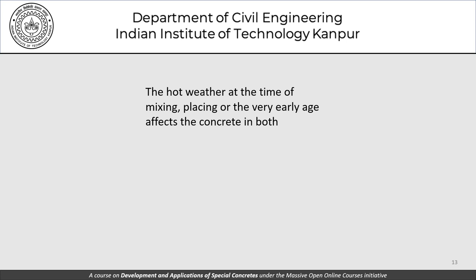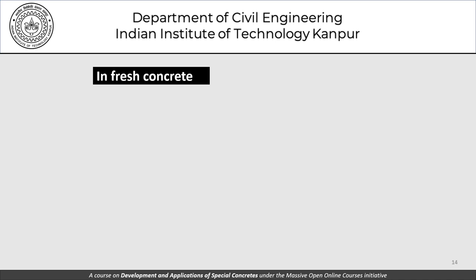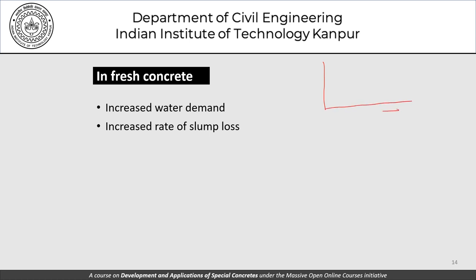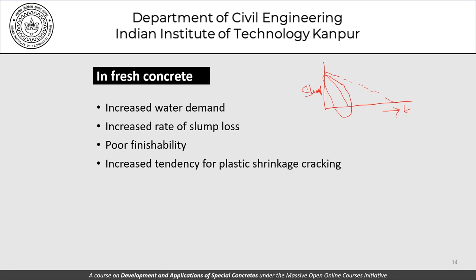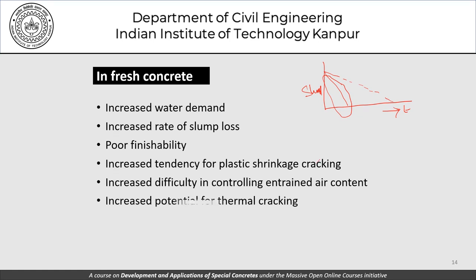Effects on fresh concrete include: increased water demand for a given slump value, increased rate of slump loss (the loss becomes more rapid than in normal conditions), poor finishability, increased tendency for plastic shrinkage cracking, increased difficulty in controlling entrained air, and increased potential for thermal cracking.